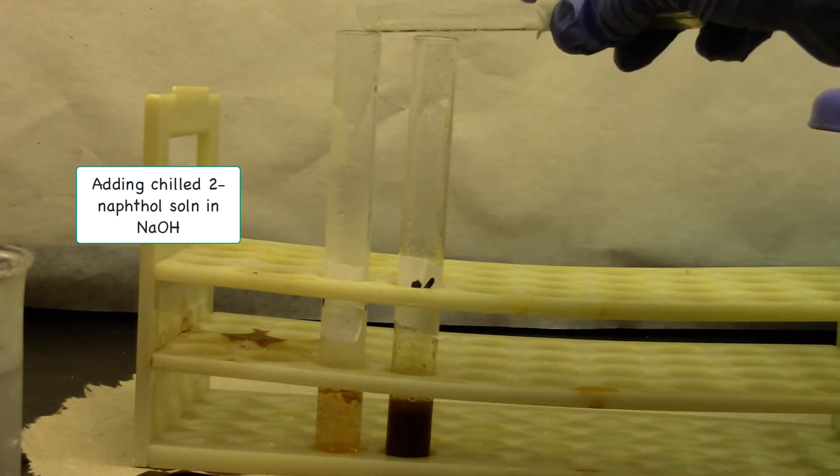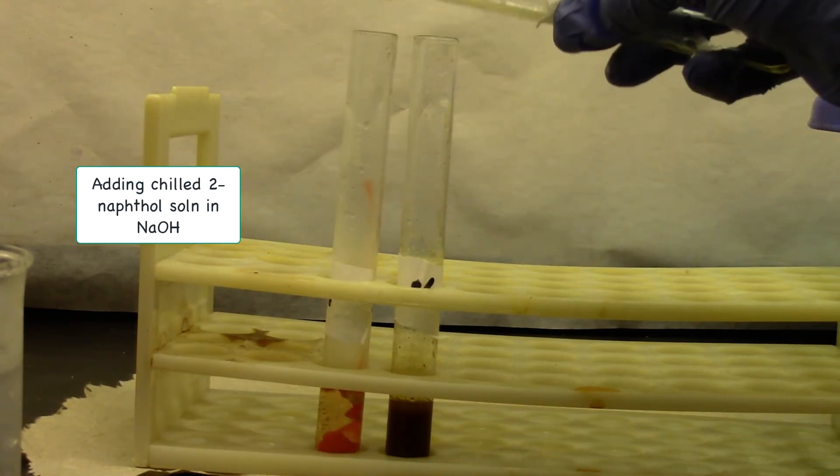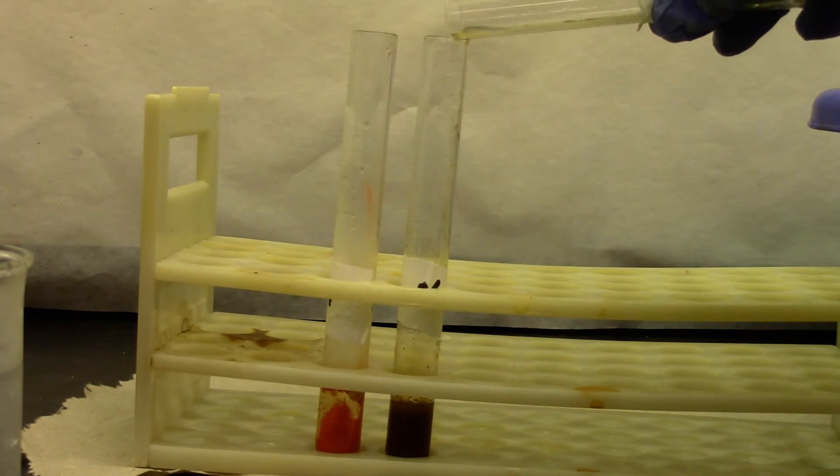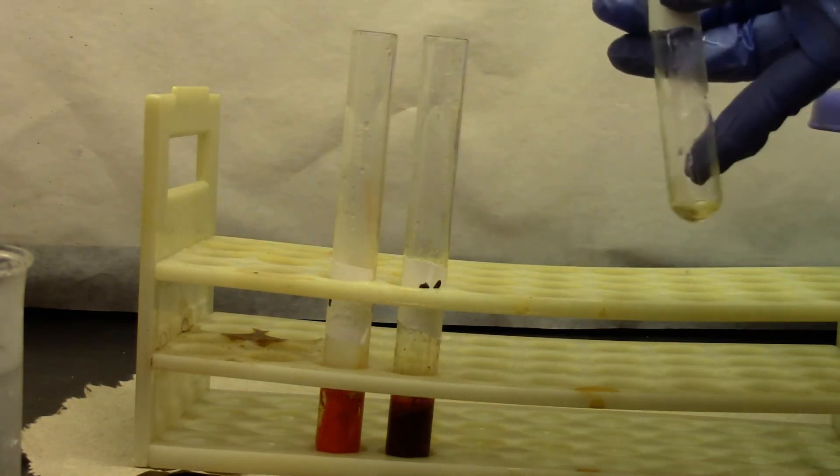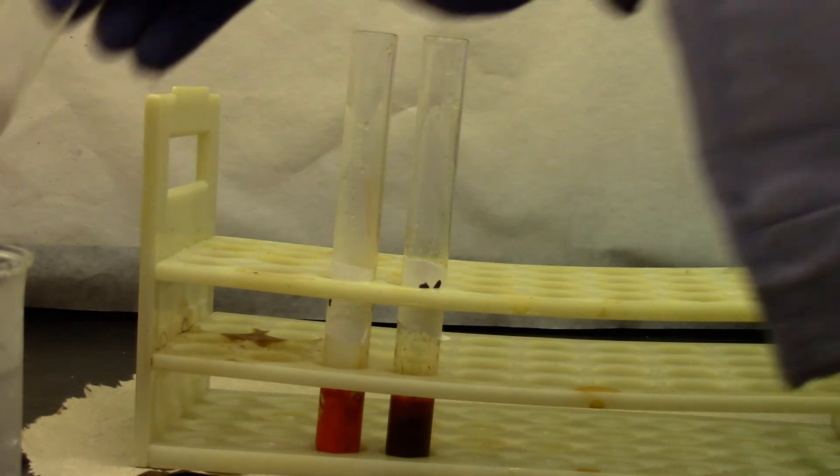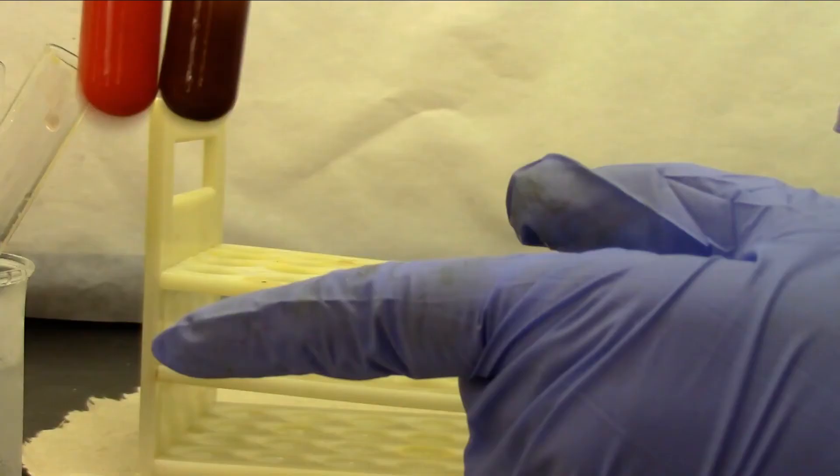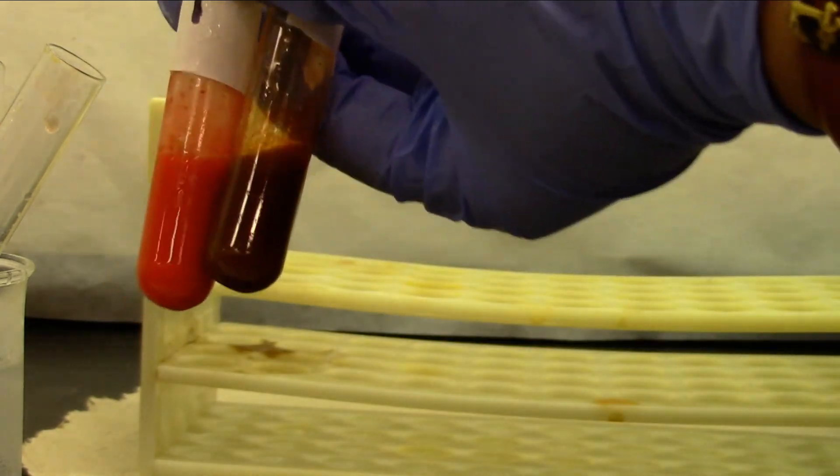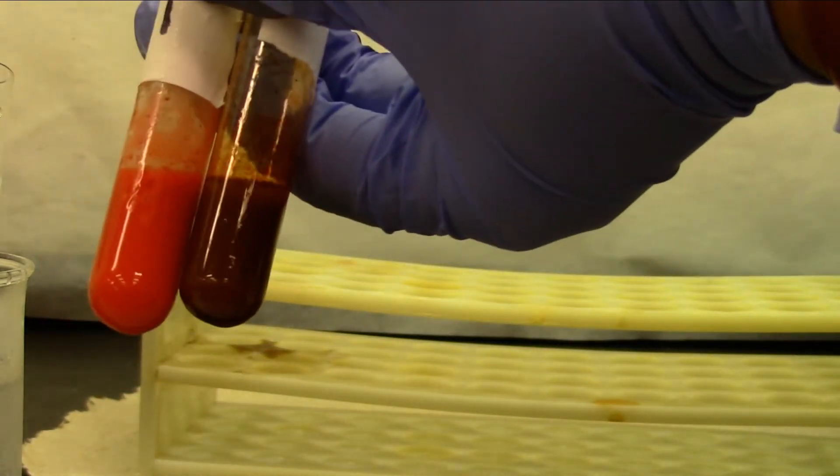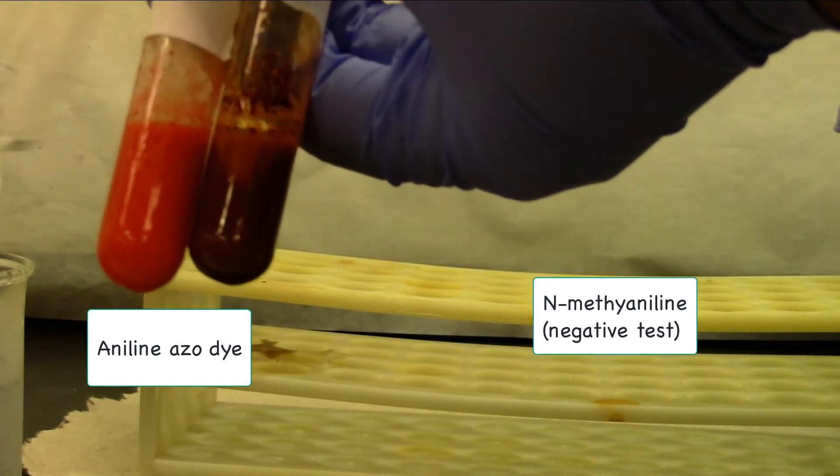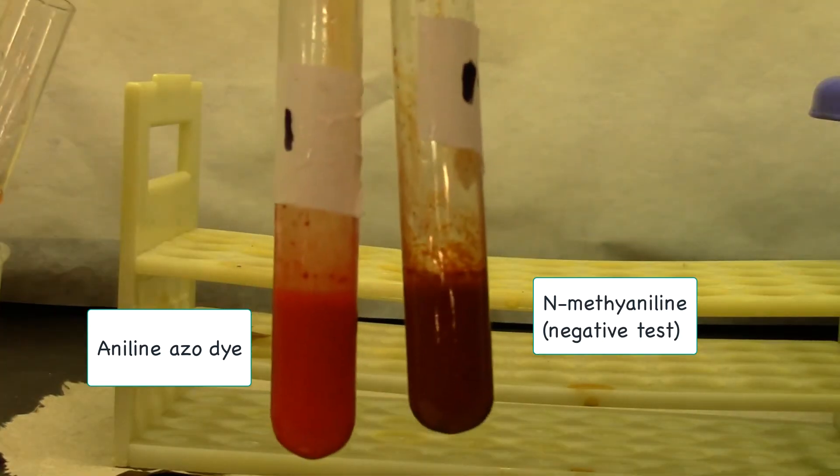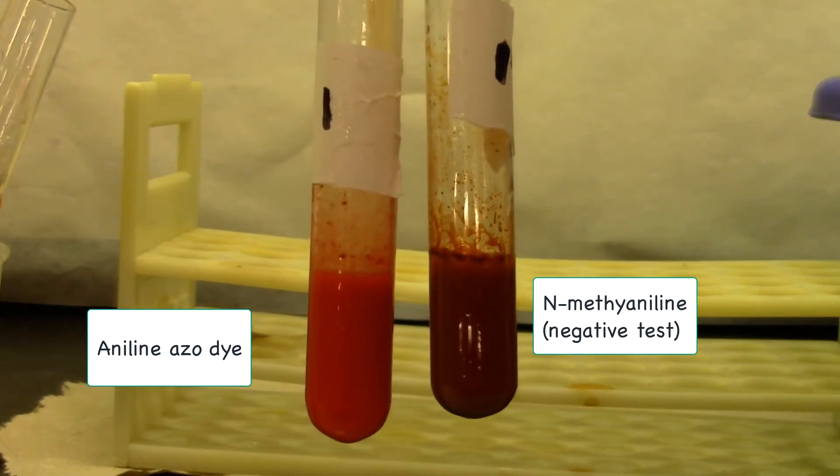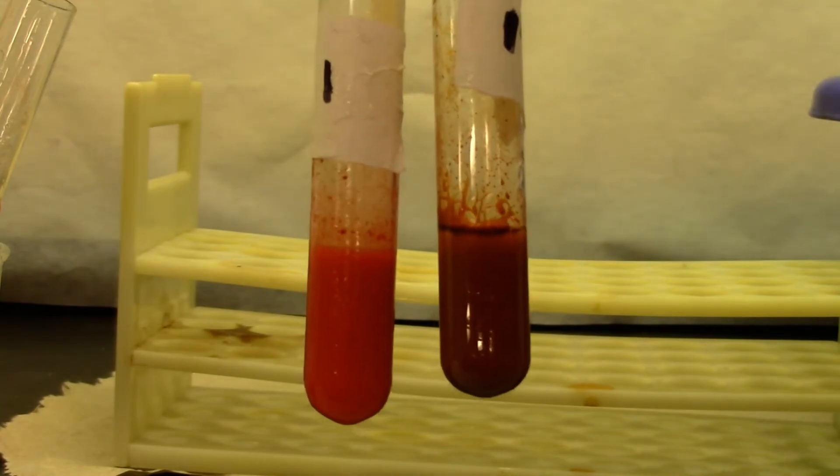When I add it to the aniline diazonium salt, it will produce a red-orange dye. Give it a mix. A secondary aromatic amine for our negative test produces a coloration, but not a red-orange dye. The primary amine is red-orange. This is more like a dark red.